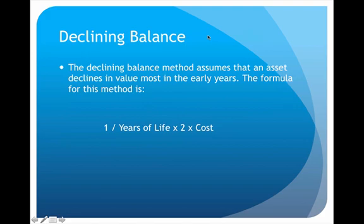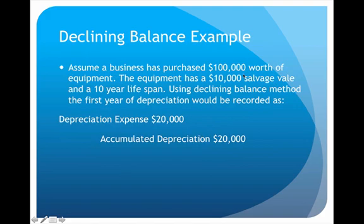A third option is the declining balance method, also approved by GAAP. The formula is: (1 ÷ years of life) × 2 × cost. It's a totally different formula from straight-line or units of production and gives a much higher depreciation, at least in the first year. Using the same example — $100,000 cost, $10,000 salvage, 10-year life — the calculation is: (1 ÷ 10) × 2 × $100,000 = $20,000 of depreciation.